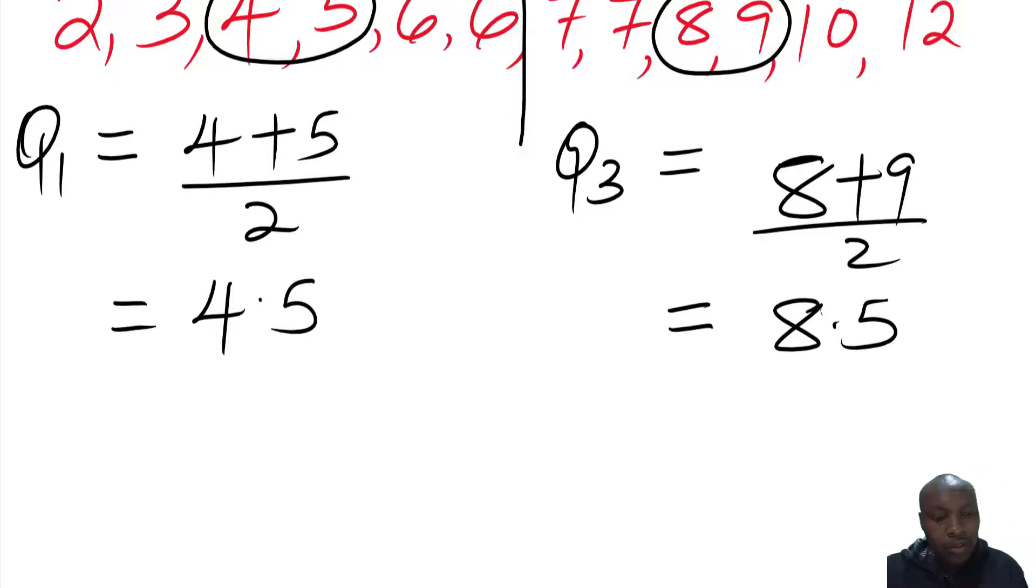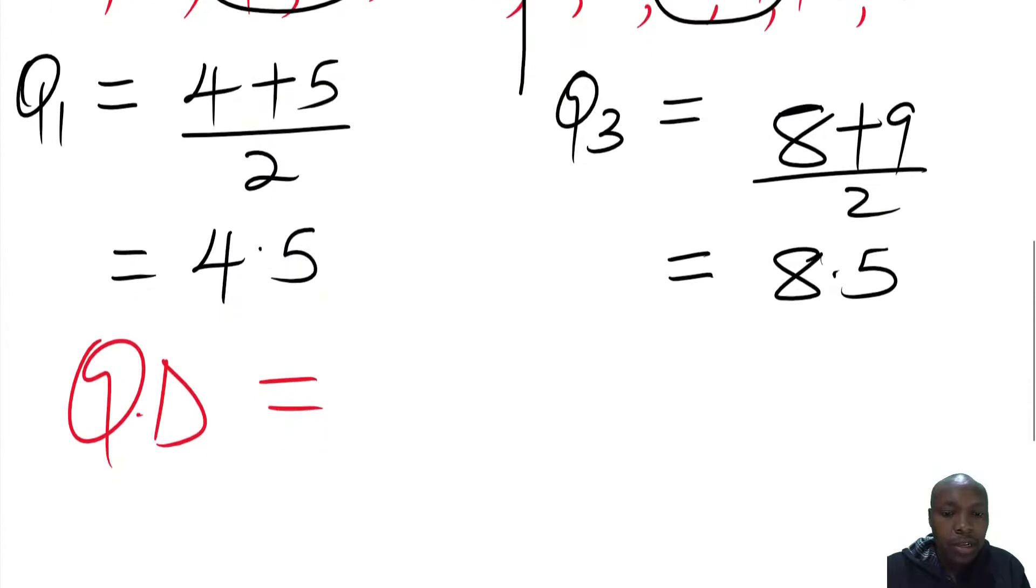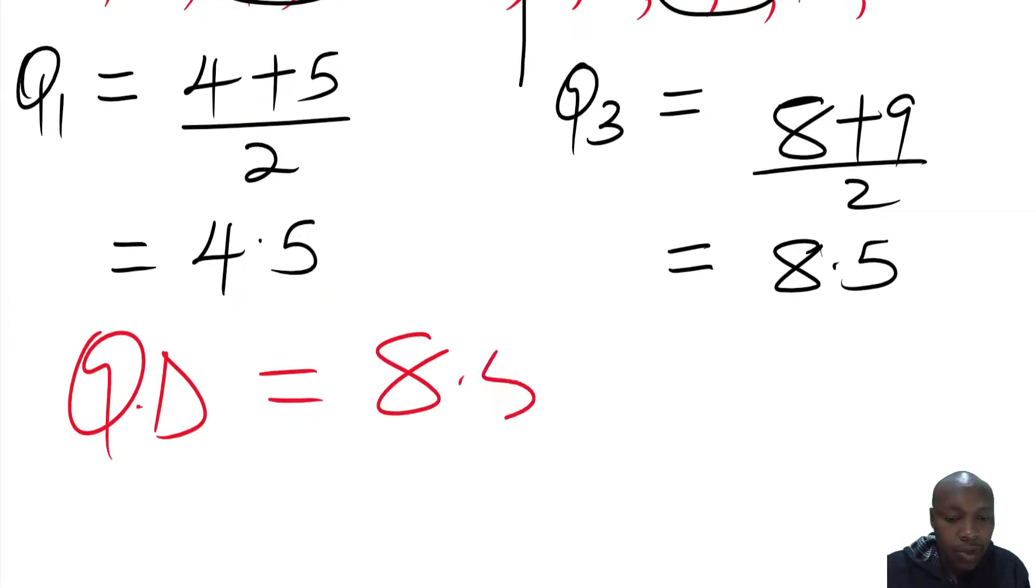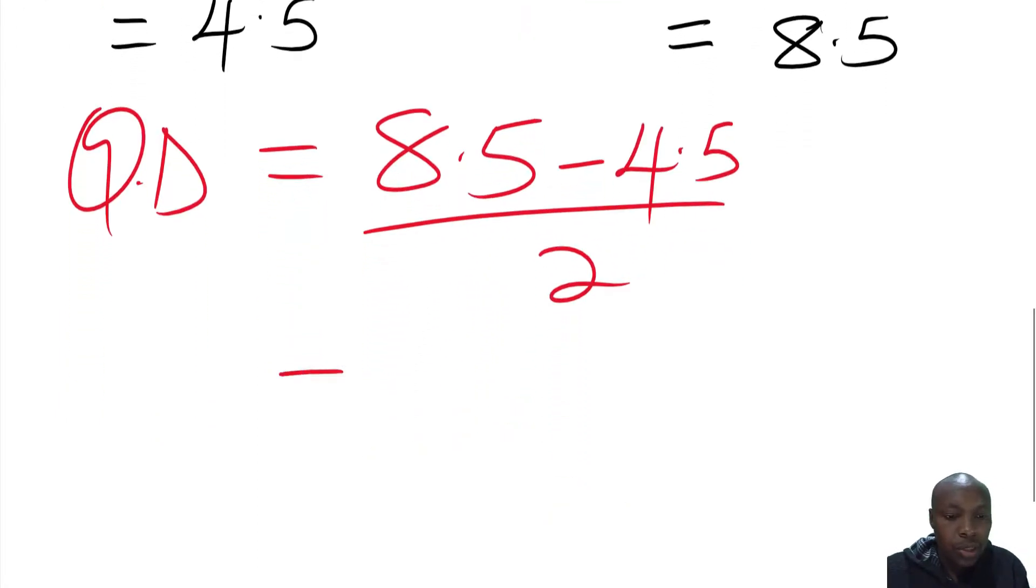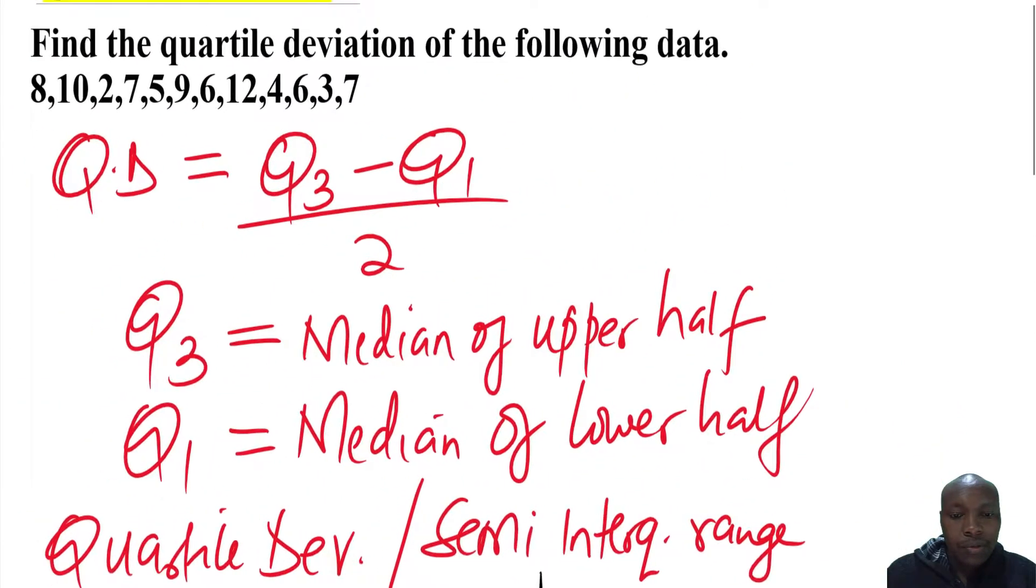Now having Q1 and Q3, therefore, a quartile deviation or semi-interquartile range will be given by Q3. Remember the formula here, Q3 minus Q1. So we have 8.5 minus 4.5. Then we divide by 2. So this will give 4, divide by 2, and we end up with 2. So 2 is now the quartile deviation. So that is simply how we get the quartile deviation of ungrouped data. Thank you.